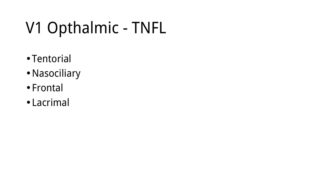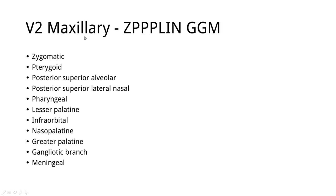Things get a bit more complicated with the second one, the maxillary or V2. It was quite difficult because of all the P's, but I managed to squeeze them into something like Zeppelin. So: Zeppelin GGM. If you play video games, you probably know GG means 'good game' — I've added an M, so 'good game, mate.' The letters stand for: zygomatic, pterygoid, posterior superior alveolar, lateral nasal, pharyngeal, lesser palatine, infraorbital, nasal palatine, greater palatine, ganglionic branch, and meningeal branch.